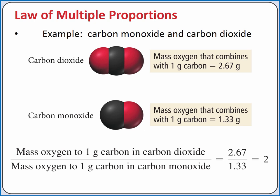So if I take the ratio of my mass of oxygen in carbon dioxide to my mass of oxygen in carbon monoxide, it should be a small whole number. And it is. My ratio is 2. That means I have twice as much oxygen in my sample of CO2 compared to carbon monoxide, CO.